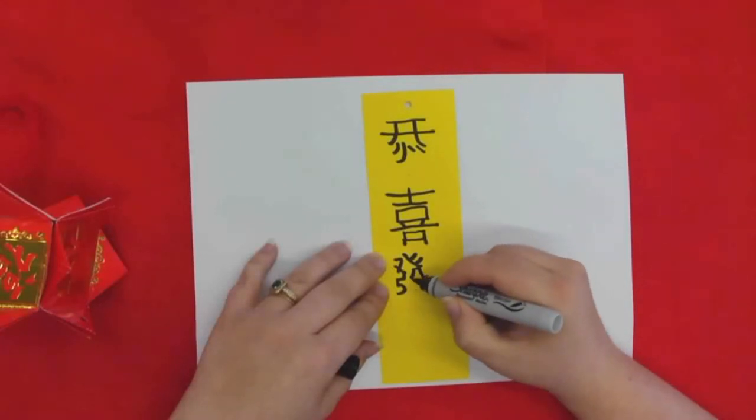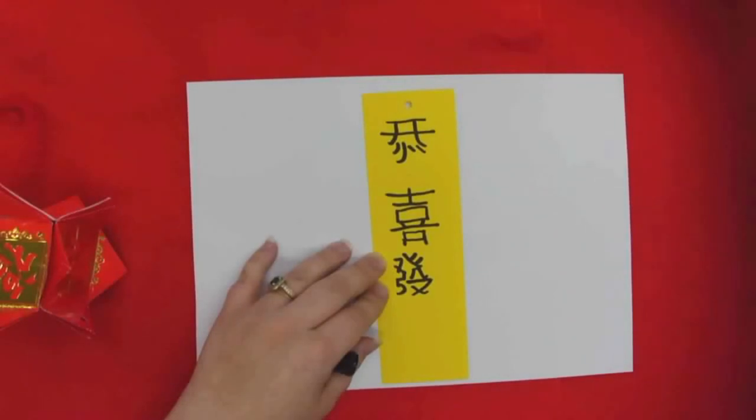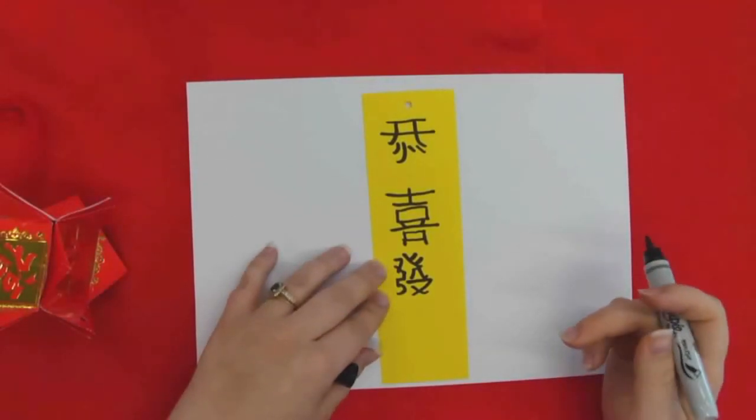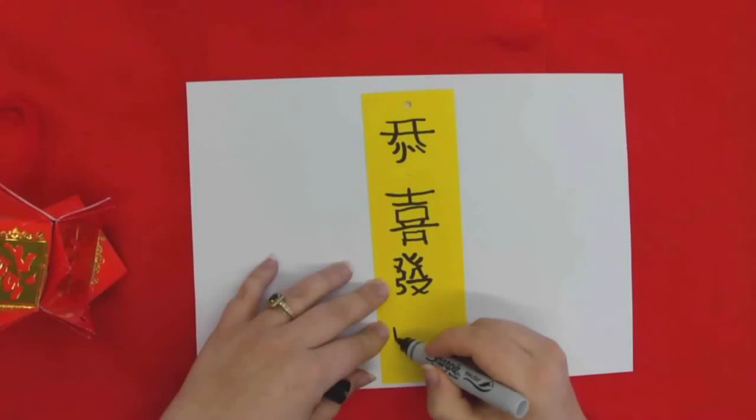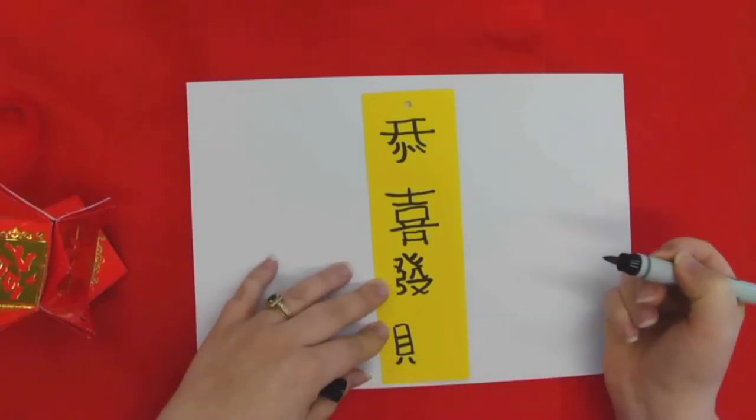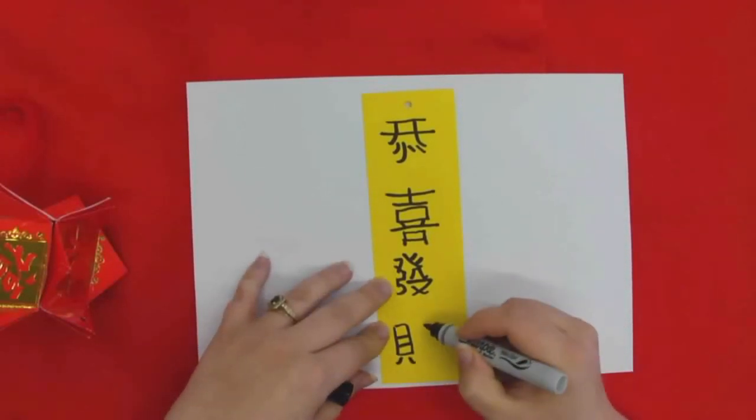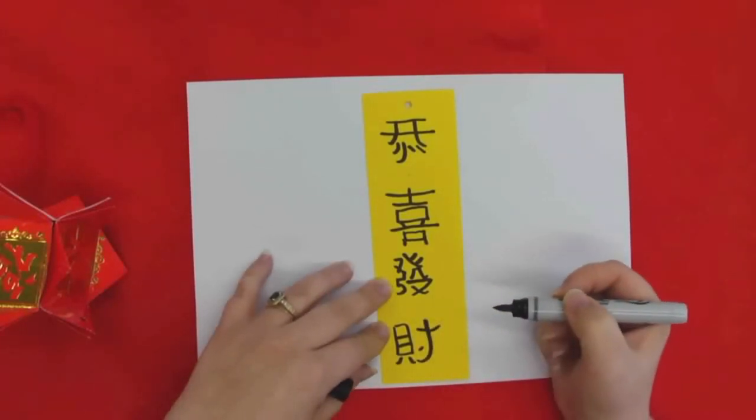A little cursive R almost, and then a little X at the bottom. And then your last character, it's almost like a backwards T.